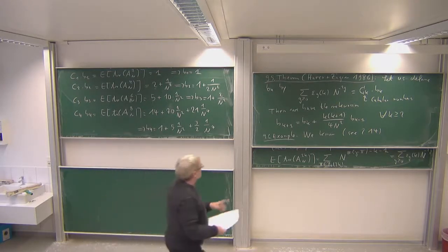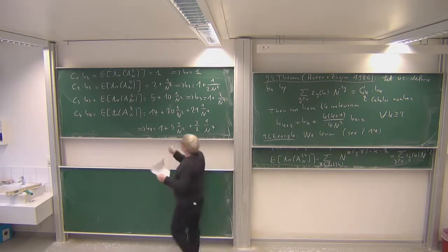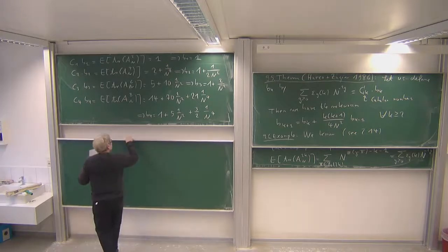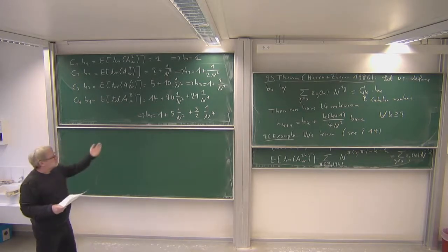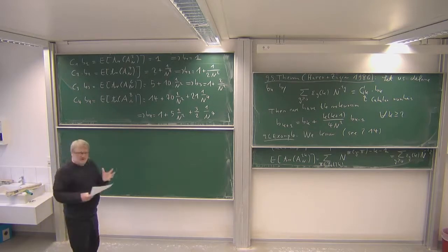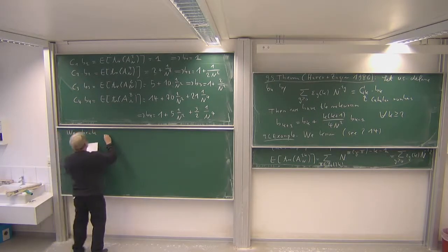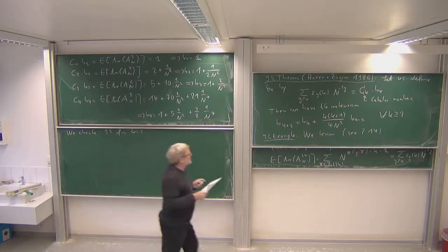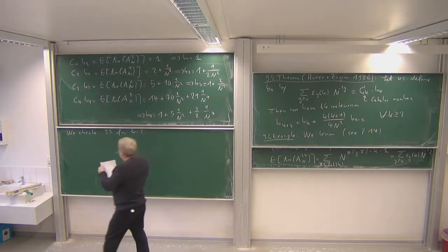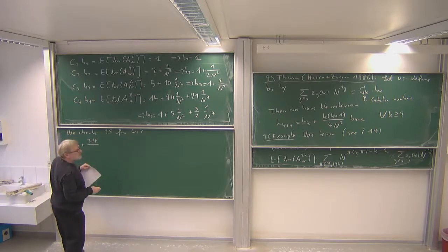Now we check the recursion for k=3: we compare b_4 with b_3 and b_2. According to the recursion, b_4 should equal b_3 + 3·4/(4n²) · b_2 = b_3 + (3/n²)·b_2. Let us verify this is consistent with the explicit values computed above.